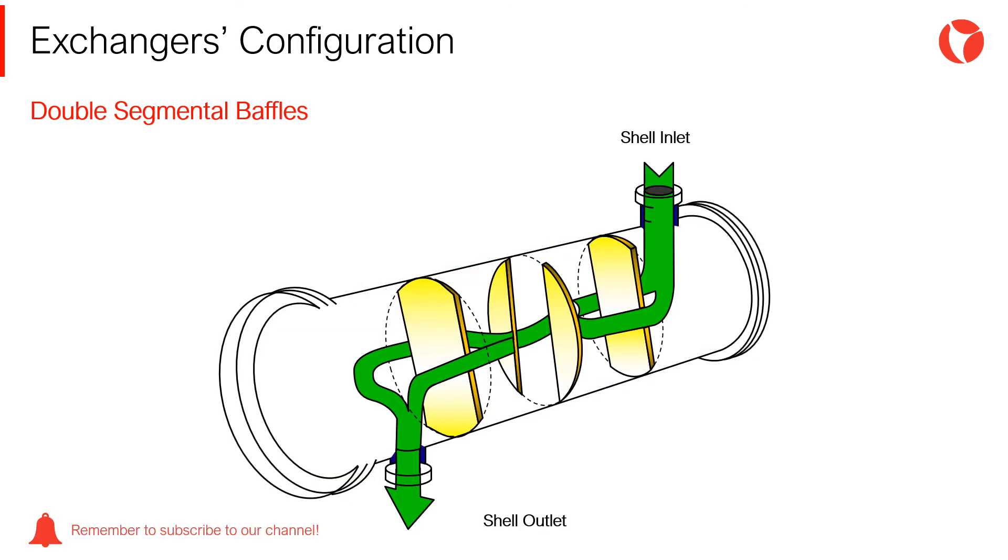One of the many alternatives is the double segmental baffle configuration. With respect to the previous one, this arrangement distributes the fluid to different parts of the shell.